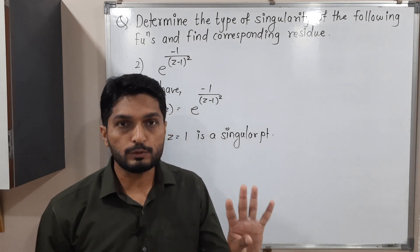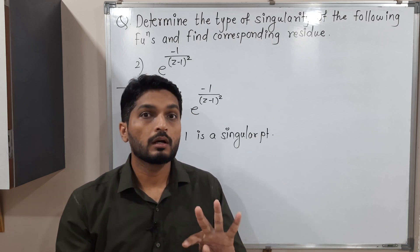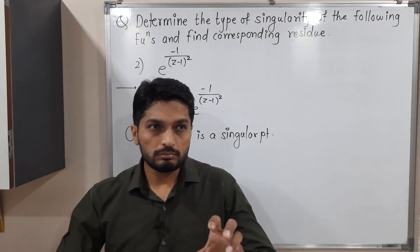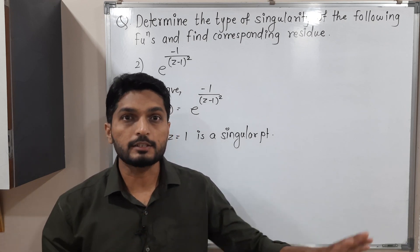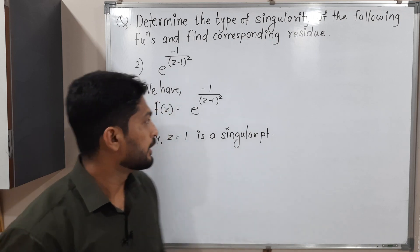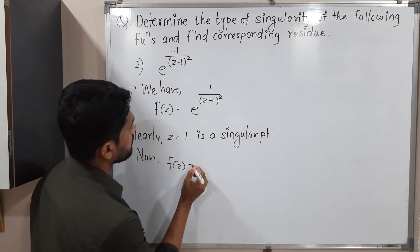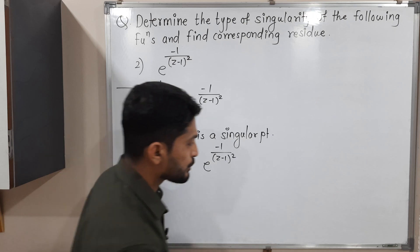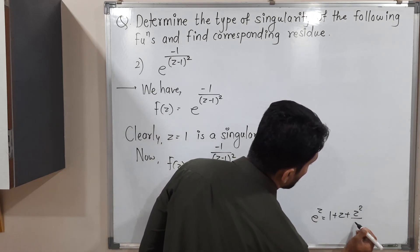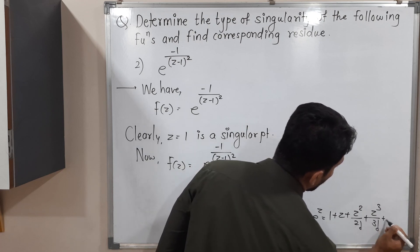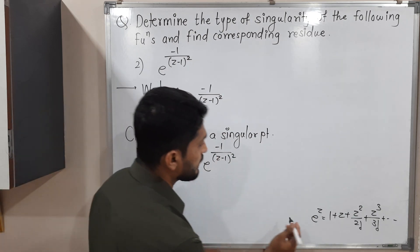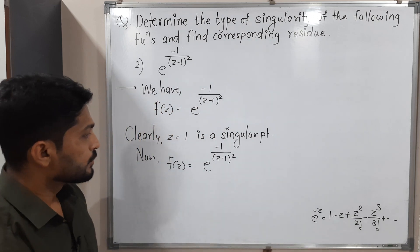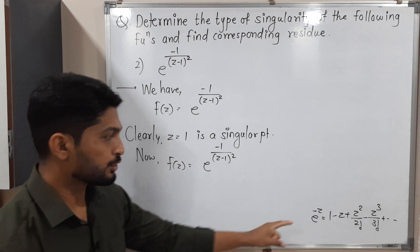We need to identify the type of singularity. There are four types: isolated essential singularity, pole, removable singularity, and non-isolated essential singularity. Three can be identified using Laurent series expansion. For this function, f(z) = e^(−1/(z−1)²), we use the standard expansion of e^z. Since there is a minus sign, the signs will alternate.